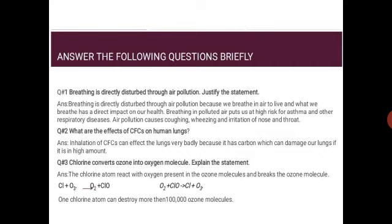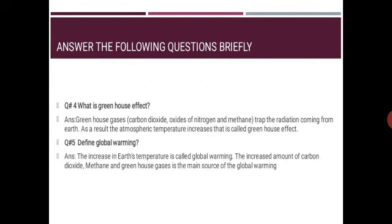Question 3: chlorine converts ozone into oxygen molecule — explain the statement. Answer: a chlorine atom reacts with oxygen in the ozone molecule and breaks it. The equation is: Cl + O3 → O2 + ClO, and O2 + ClO → Cl + O3. One chlorine atom can destroy more than one lakh ozone molecules.